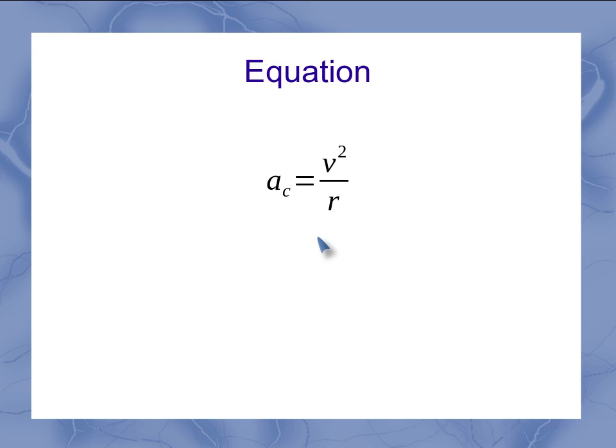Now the equation that we're going to have for centripetal acceleration is this one shown right here. So a with the subscript of c stands for our centripetal acceleration. I've got my dependence on my velocity and my dependence on the radius. And so my centripetal acceleration is equal to v squared over r.